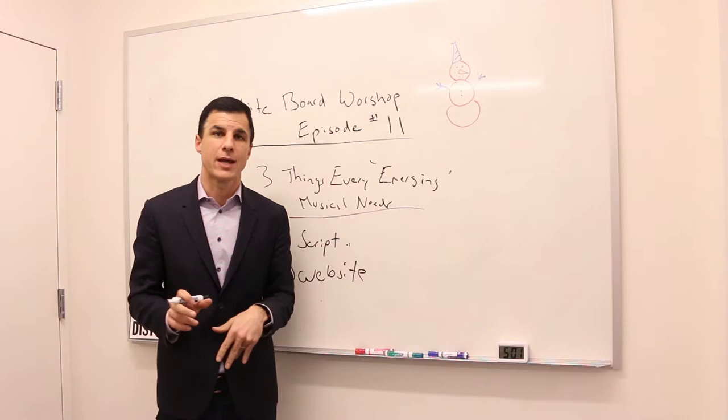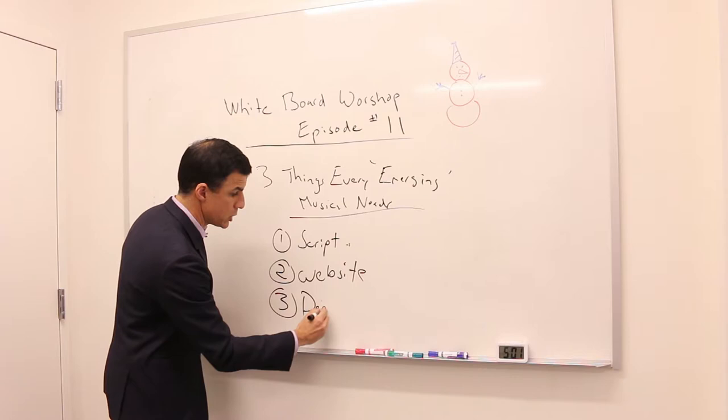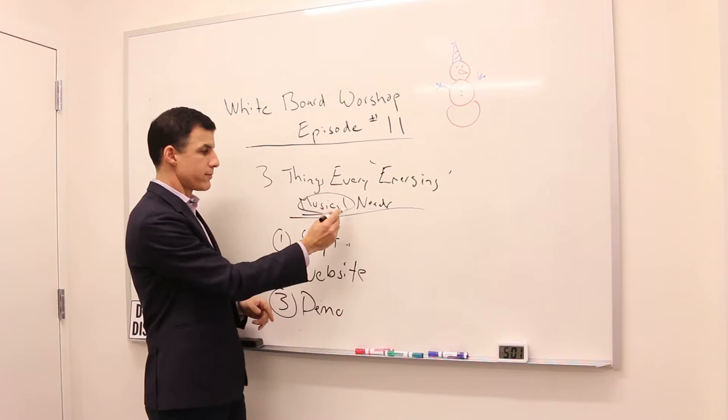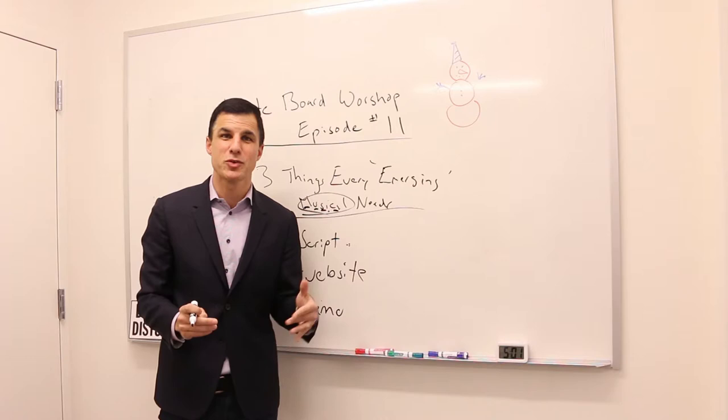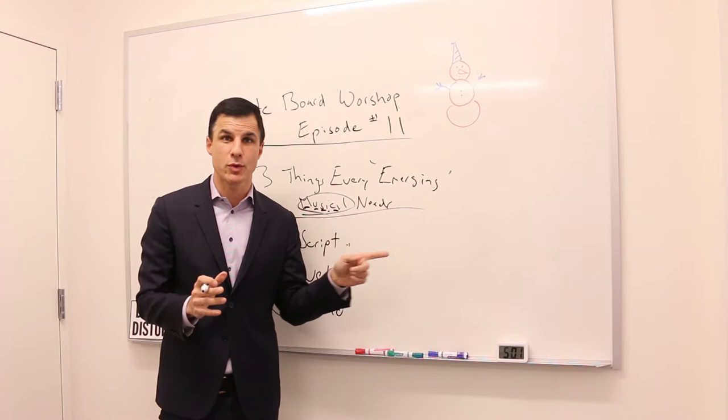And the third thing you're going to need, the third thing for a musical—that's what we're talking about here, musicals—you need a demo. What's the root word of musical? M-U-S-I-C. Music. That means the music of a musical is a very key component of any emerging musical. We're going to need to hear that music.